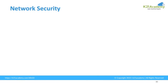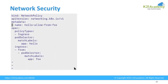So let's look at how we define our network policies. This is a kind NetworkPolicy. It has an API version on which the NetworkPolicy kind was introduced, and metadata associated with this network policy — that is the name of the policy. In the specification section, you can specify the policy type: either a policy can be of ingress type or egress type.